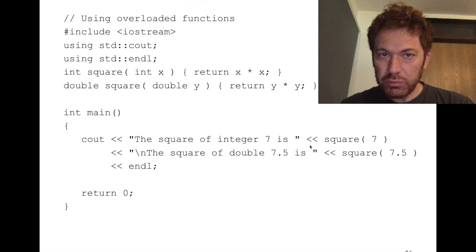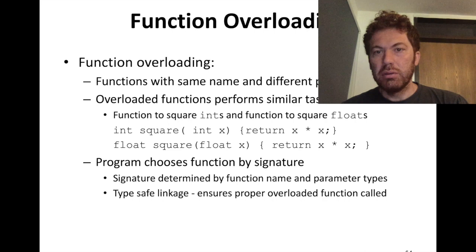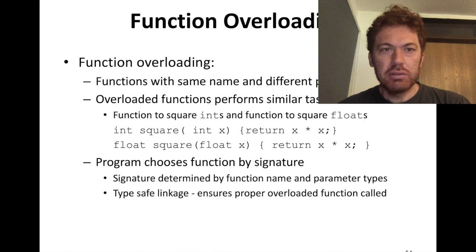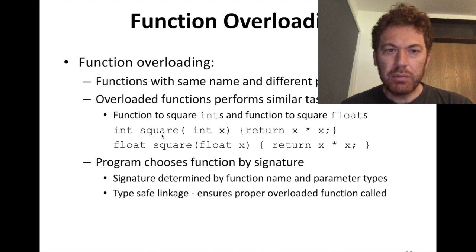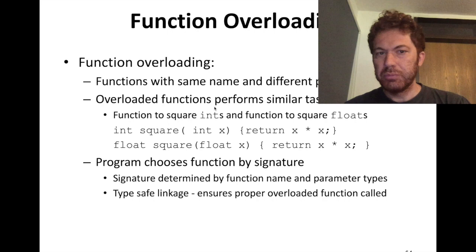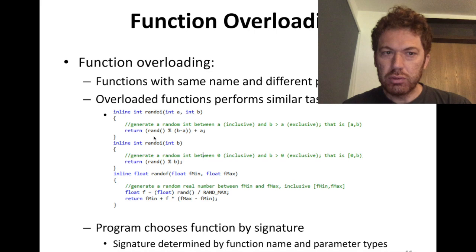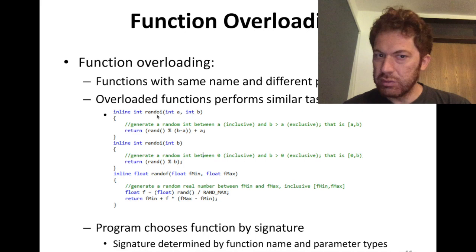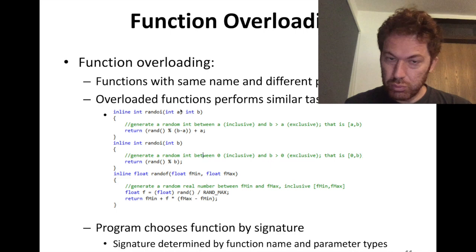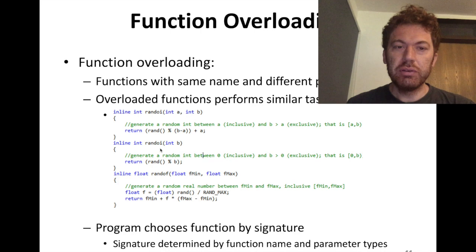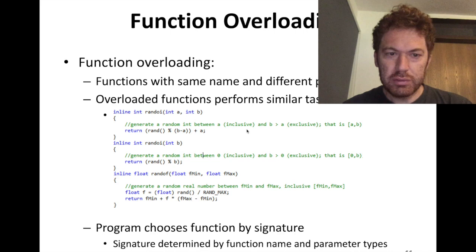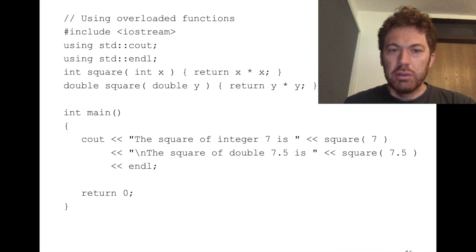We also have operator overloading. Function overloading is something you have already experienced with if you have programmed in C — it's a quite regular and well-known concept. Basically you have functions with the same name but they differ by the input parameter types. Here I have a set of random number generator functions. The first two are overloaded — they have the same name 'rando', one returns a random integer between a and b, the second returns an integer between zero and b. The third function 'randof' for floating point numbers is not overloading because it has a different name.